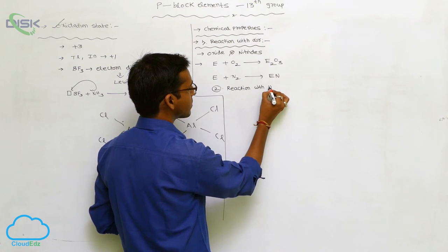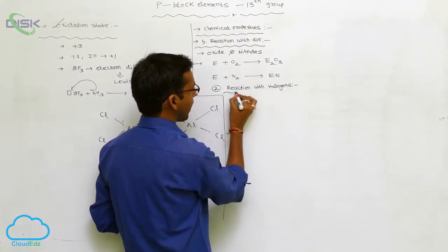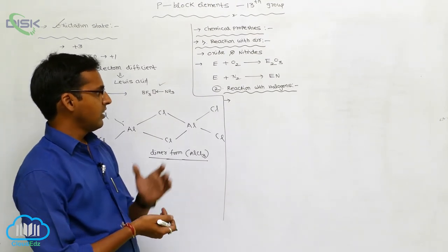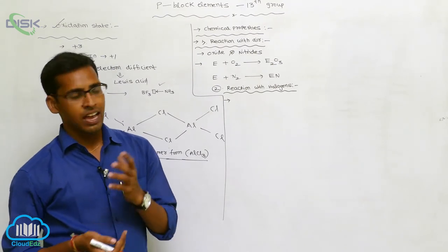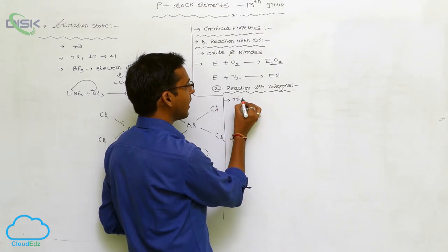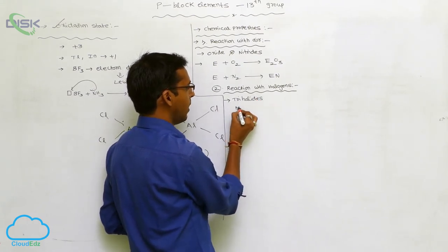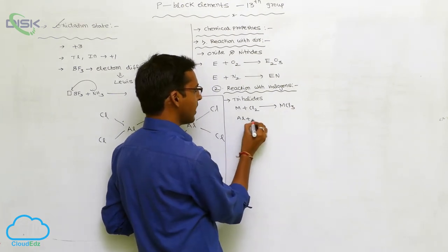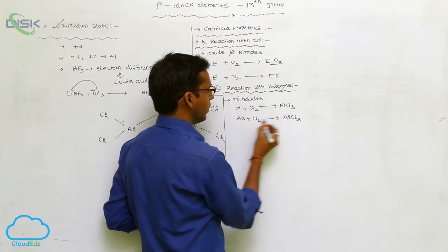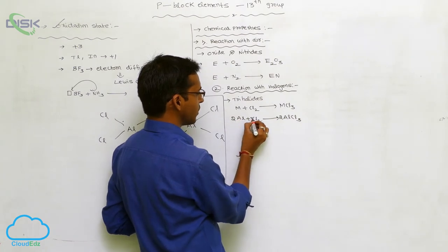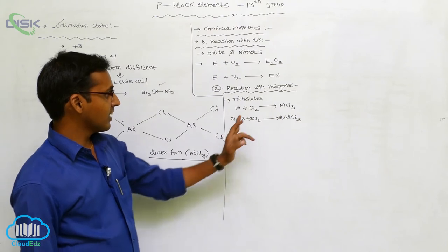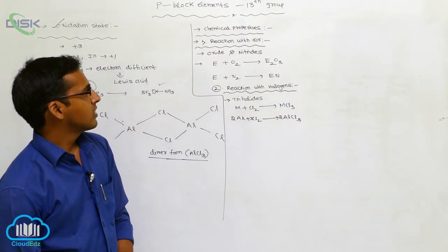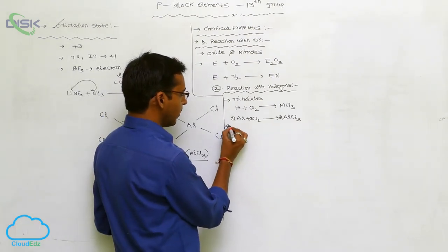The second chemical property is reaction with halogens. Group 13 elements react with halogens to form trihalide compounds. For example, a metal reacts with chlorine to give MCl3 (metal trichloride). Aluminium reacts with chlorine to form AlCl3. Considering 2 aluminium atoms with 3 chlorines each gives 6 chlorines total in the dimerized form. So the metals form trihalide compounds with halogens.